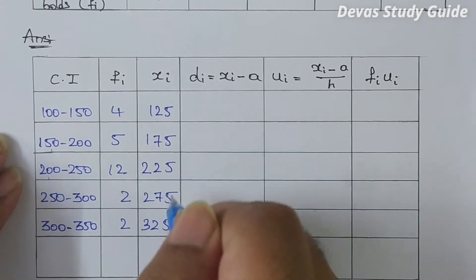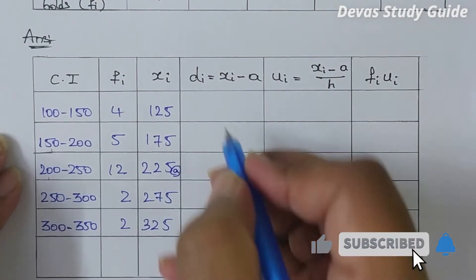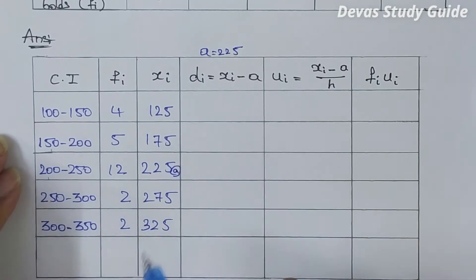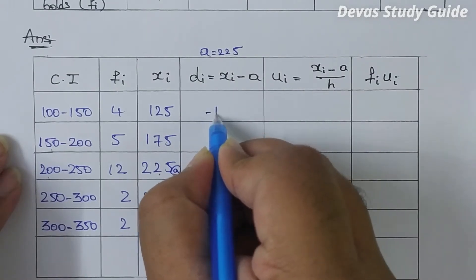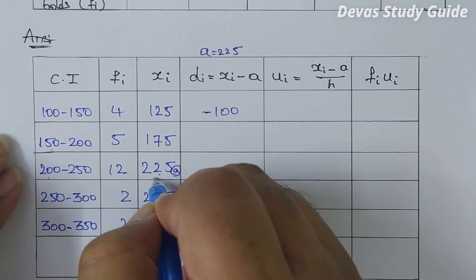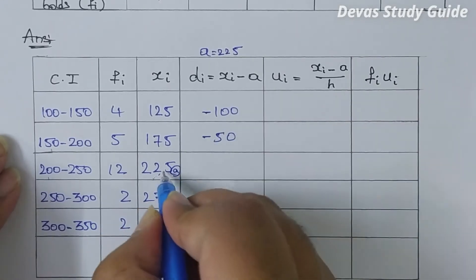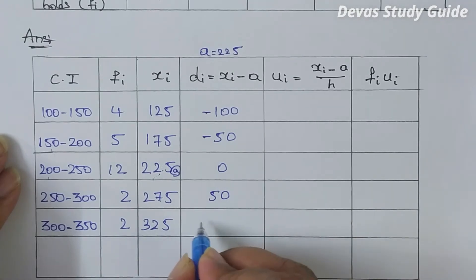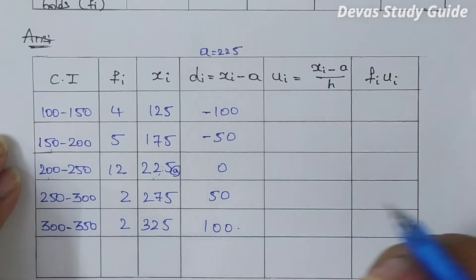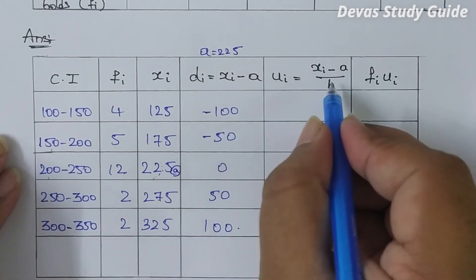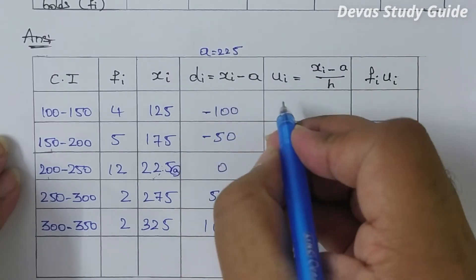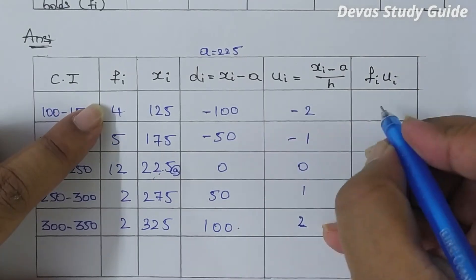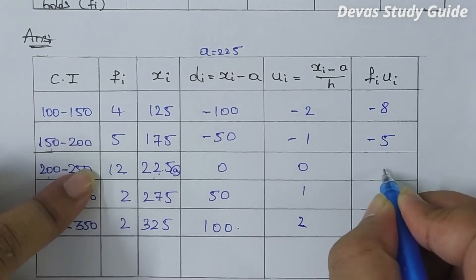So here the assumed mean (a) is 225. Computing ui = (xi minus a) divided by h, where h is 50. The ui values come out as: minus 2, minus 1, 0, 1, 2. Computing fi times ui: 4 into minus 2 is minus 8, then minus 5, then 0, then 2, then 4.